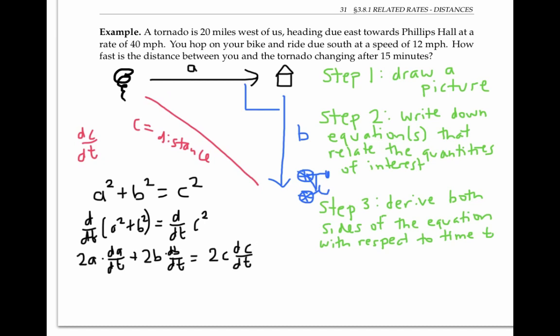Now I can use the information given to me in the problem to plug in numbers and solve for the quantity of interest, dc/dt. Since the tornado is moving at a rate of 40 miles per hour, the distance between the tornado and Phillips Hall is decreasing at 40 miles per hour. In other words, da/dt is negative 40, that negative sign is important here, and comes from the fact that the distance is decreasing.